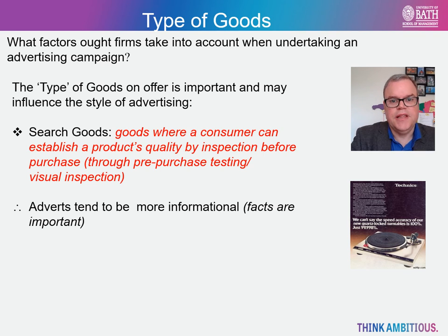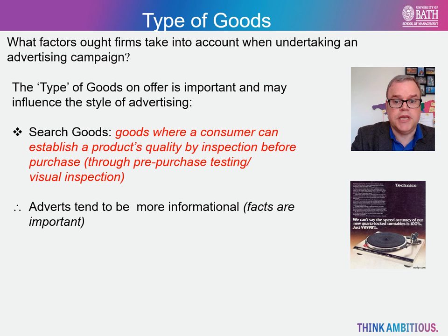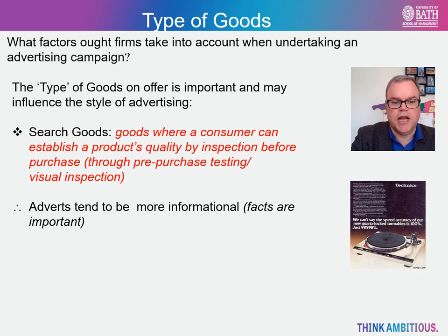Finally, it is worth considering the type of goods that firms are selling and how these can affect the style of advertising. This is especially important if you're a marketer. First, we have search goods — these are goods which the consumer can pre-inspect before purchase. Consumers will check out the product's quality and, in the case of a car, possibly take it out for a test drive. In such cases, the adverts will tend to be more informational and provide key facts about the product's attributes and where to purchase them. For example, this Technics advert from 1981 extols the virtues of its latest hi-fi system.